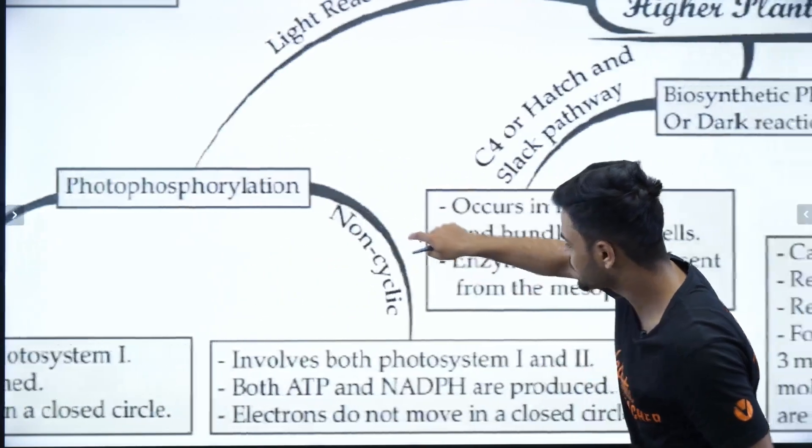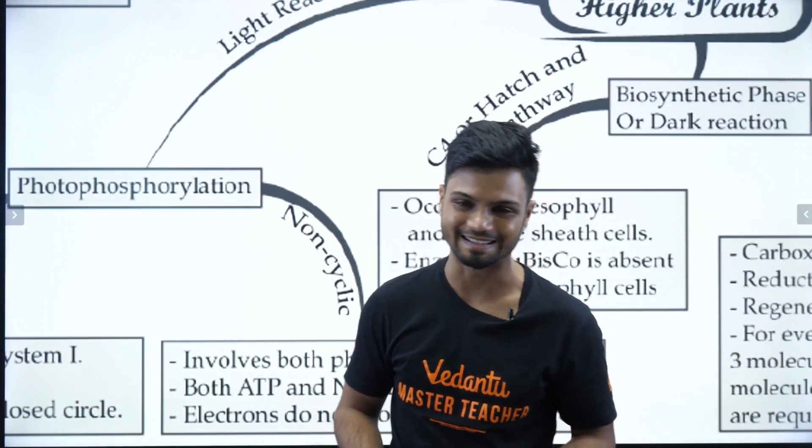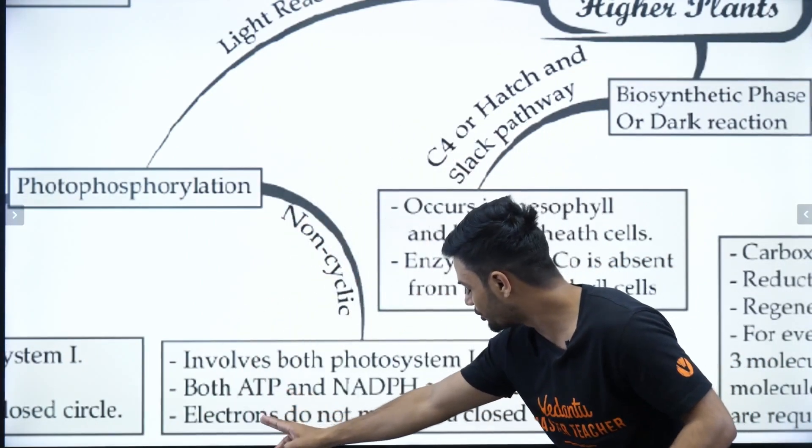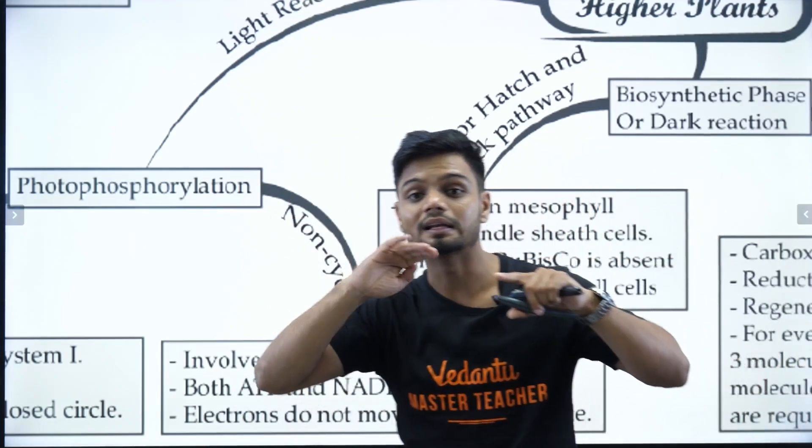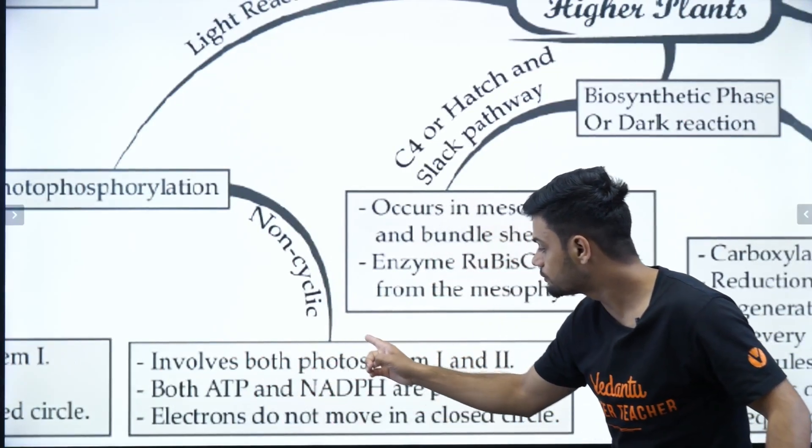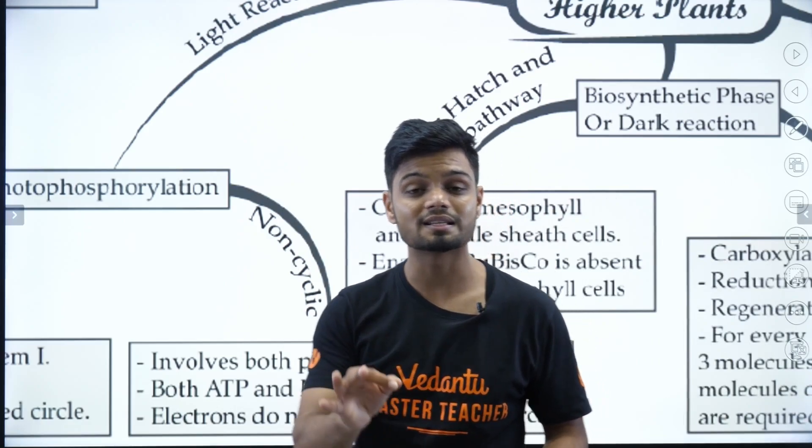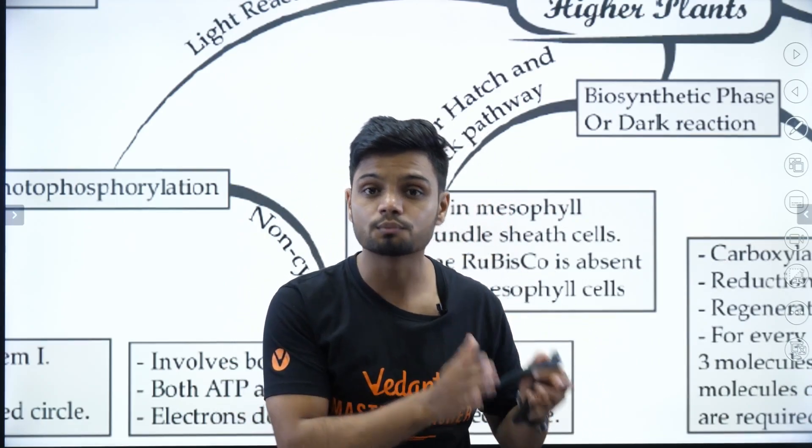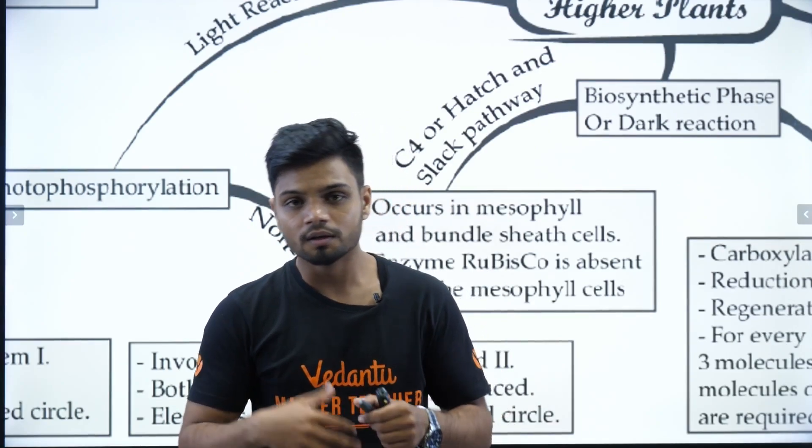In non-cyclic, I'll tell you the most important point. It is non-cyclic in nature. That is, electrons do not move in a closed circle. That is complete linearity. Then we have involvement of both photosystem 1 and photosystem 2. That is, photosystem 1 at 700 nanometer and photosystem 2 at 680 nanometer. Both are involved here.